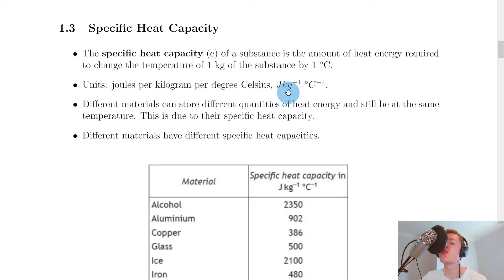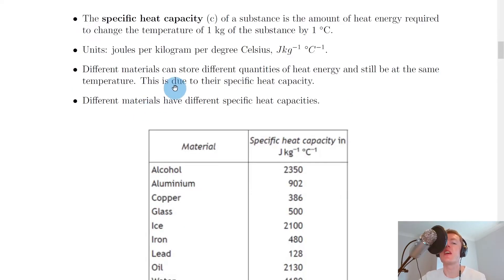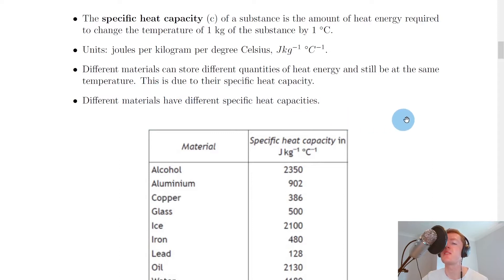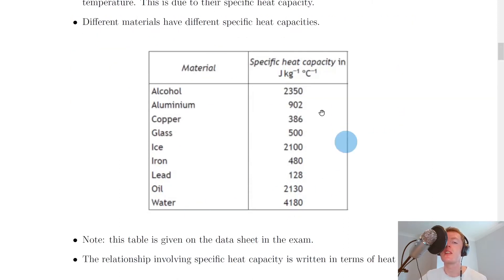You can write this as joules kg to the minus one degrees Celsius to the minus one, or alternatively as joules slash kg degrees Celsius. Different materials can store different quantities of heat energy and still be at the same temperature — this is due to their specific heat capacity, as different materials have different specific heat capacities.